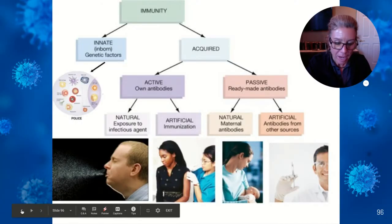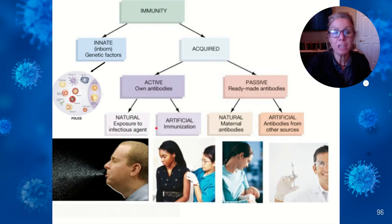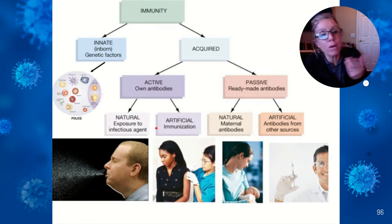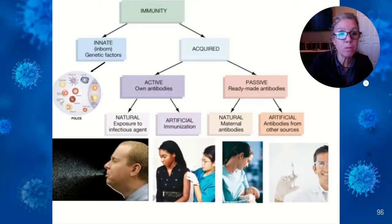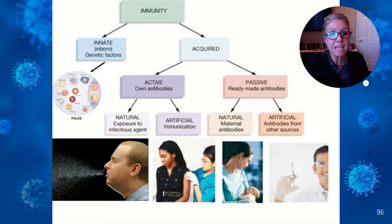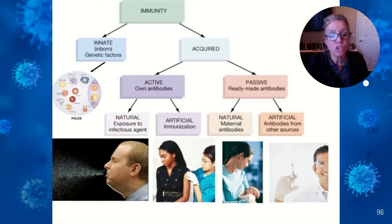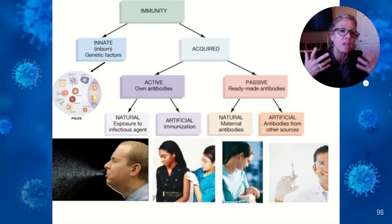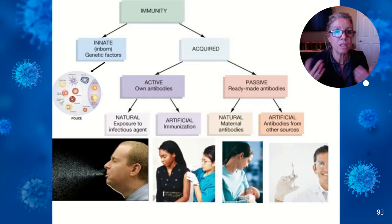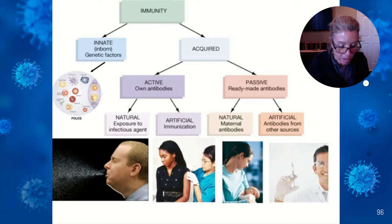Passive immunity is short-lived because you don't own this immunity — you're just borrowing somebody else's antibodies. You do not develop memory cells because the antibodies will inactivate the antigen before you even have the two weeks it might take to develop your active immune response. Examples of passive immunity are breast milk and gamma globulin shots with antibodies.